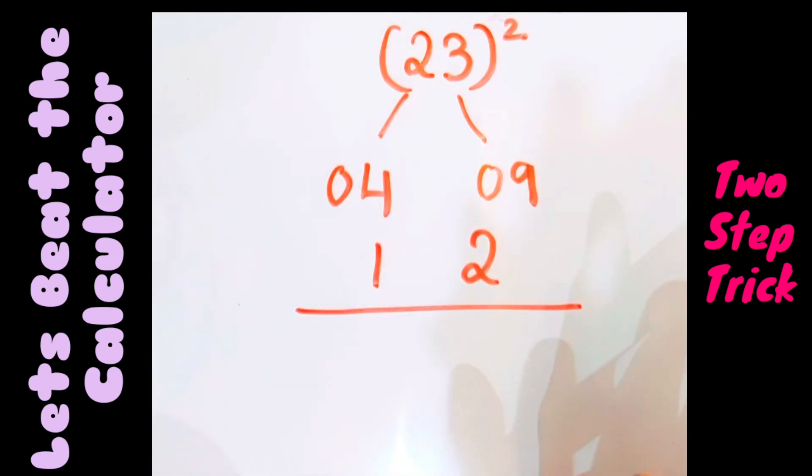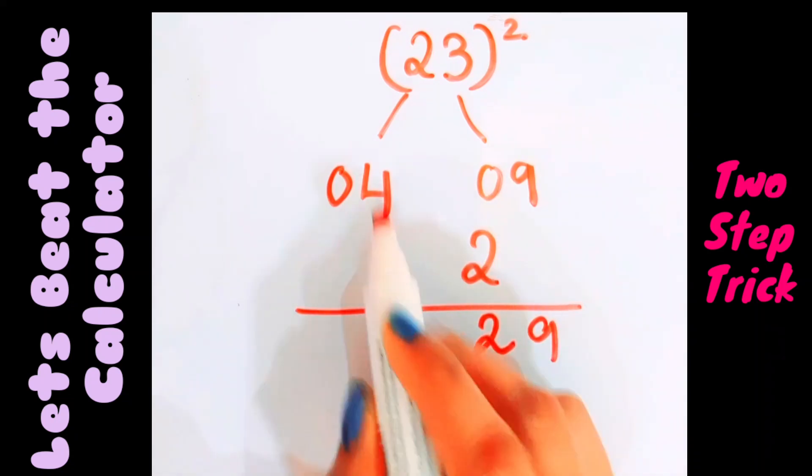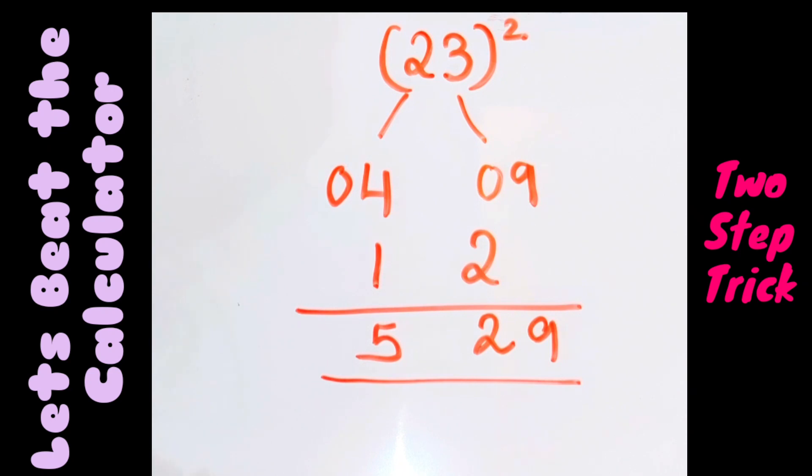Leave the first position and from the second position write the answer that you get. Add this number, that is 9. Next is 2, 4 plus 1 is 5, 0 doesn't have any value. I got the answer of 23 square, that is 529.